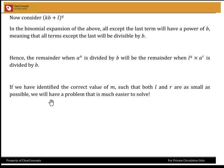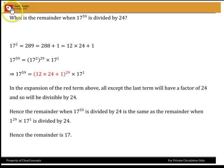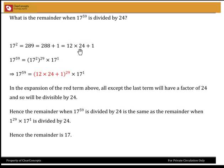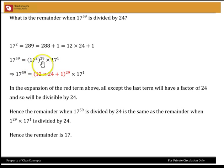Let's take an example — not the one you were given, so that you need to work on that one yourself. What's the remainder when 17 to the power 59 is divided by 24? I look at 17 squared, which is 289. That can be written as 288 plus 1, and 288 is 12 times 24. So I've got 12 times 24 plus 1. I can write 17 to the power 59 as 17 squared, whole to the power 29, times 17 to the power 1. You can check with your theory of indices that the indices add up.